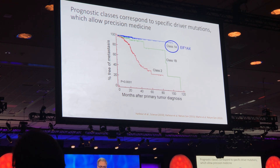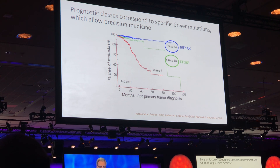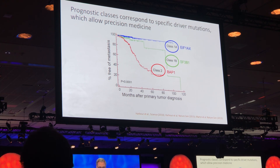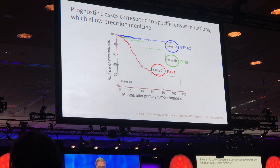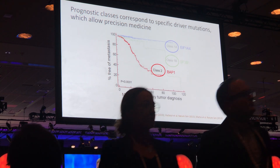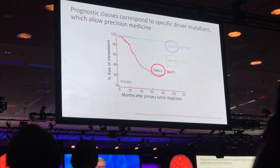Class 1A is associated with EIF1AX, class 1B with SF3B1. And importantly, as I mentioned before, the class 2 tumors are associated with BAP1 mutations, as we first described in 2010, and it's been validated by many groups. So I'm going to focus the rest of my talk on BAP1, as this is where most of the patients are dying — the ones that get BAP1 mutations.